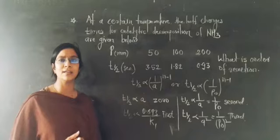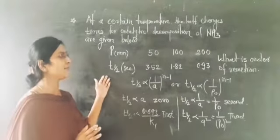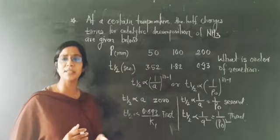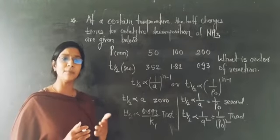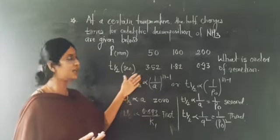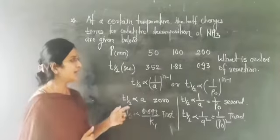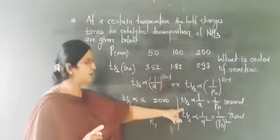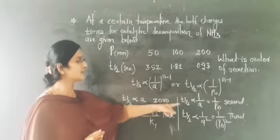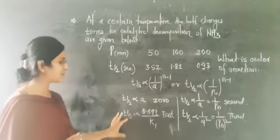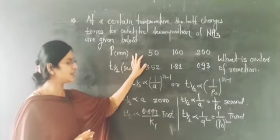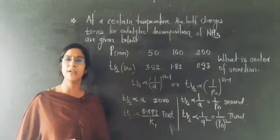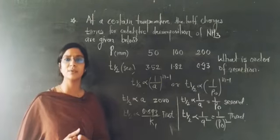When this type of numerical comes in front of you, just look at the data — data regarding pressure or concentration. Check what relationship is developed: if we increase the pressure, does the half-life increase or decrease, and what sequence is observed? If you understand this, this example makes it clear. This is one example of a second order reaction. But if you understand the relationship between T½ and initial concentration, you can determine whether the reaction is zero order, first order, second order, or third order. We will discuss the next numerical on the same topic.